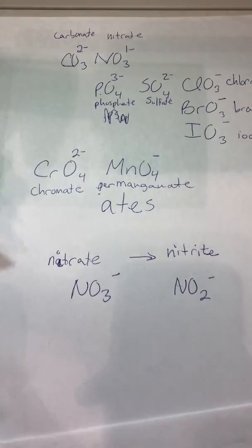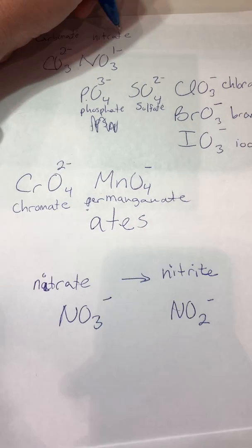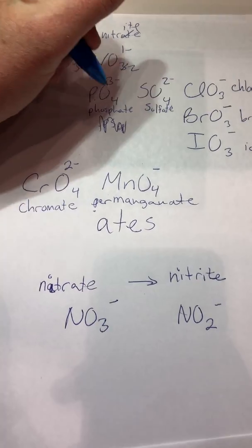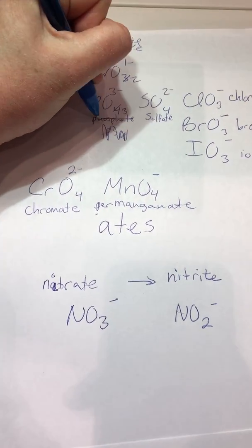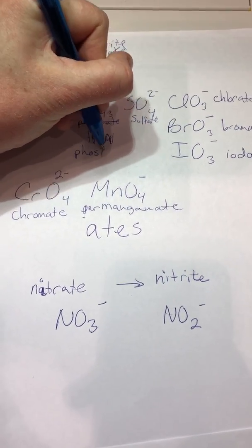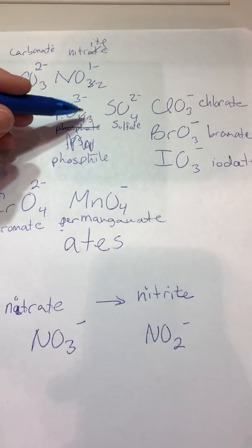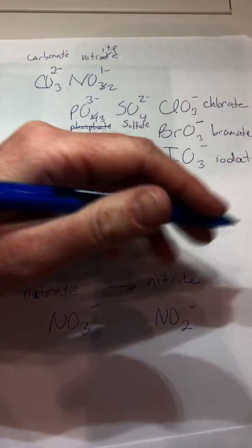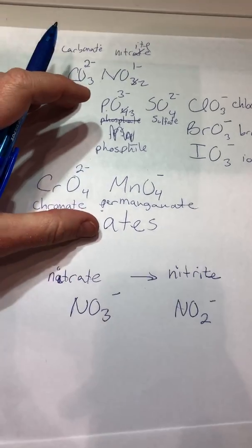And this works for every single one of these. So you go from an -ate to an -ite, you simply change the number of oxygens. And I can take phosphate and make it phosphite by changing that four to a three. And now it's phosphite. And that works with every single one of these, turning it to an -ite.